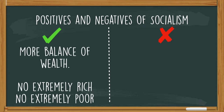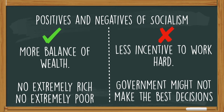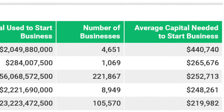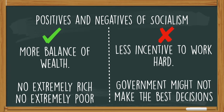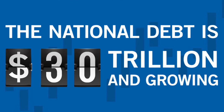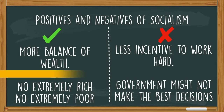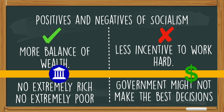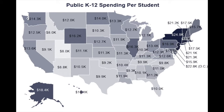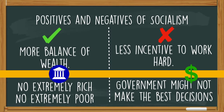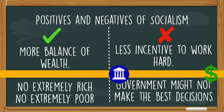The positives are a more balanced distribution of wealth. The negatives are pretty severe: there's less incentive to work hard or start a business. Why start a company like Nike if you're going to make the same amount as your workers? Another negative is that the government doesn't always make the best choices — what would government Nikes look like? With socialism, it's not all or nothing. Some countries choose more socialism, others less. Public education in the USA is run by the government, so it's a social program, but not every business in America is socialist.